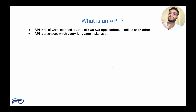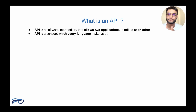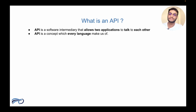An API is a software intermediary that allows two applications to talk to each other. API is a concept which every language makes use of, so it doesn't depend on which programming language you are coding in. It can be Python, Java, C, or any language. But API is the concept which will remain constant in each and every language.